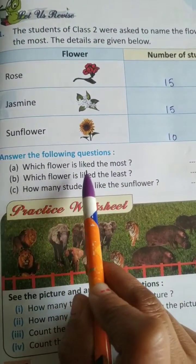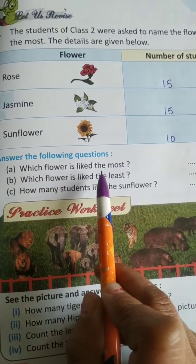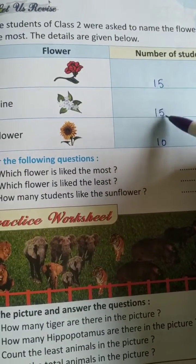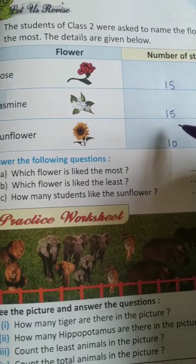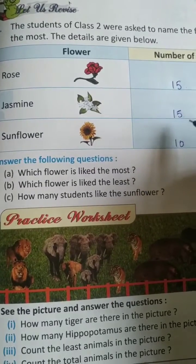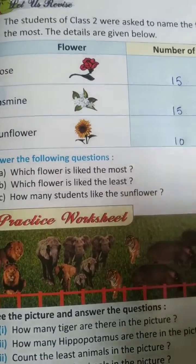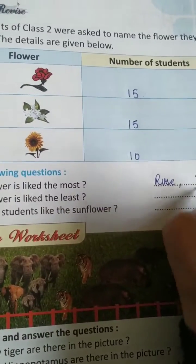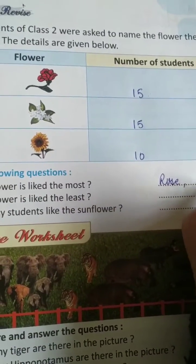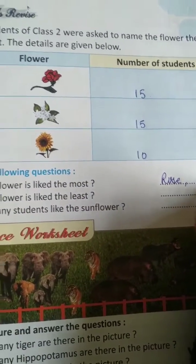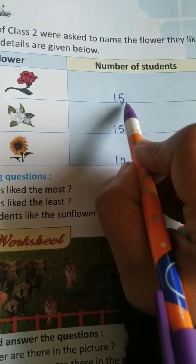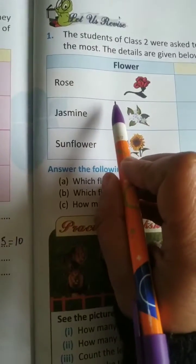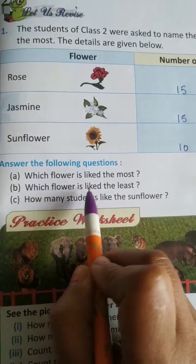Which flower is liked the most? See children, this is a different question — 15 and 15 are both the same. So we can say rose and jasmine. This is a different question I have given you — if the number is the same, that is what you have to write. If it would have been 16 or 20 or something, then you would have written only rose.